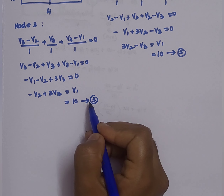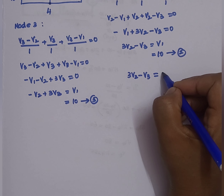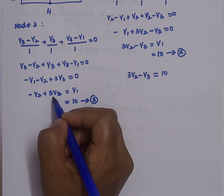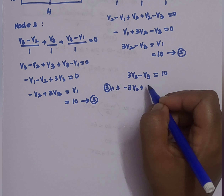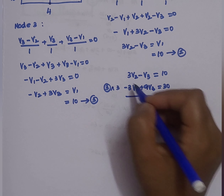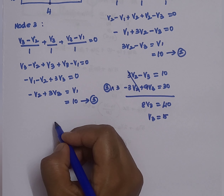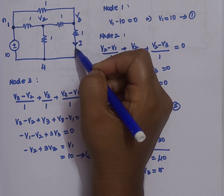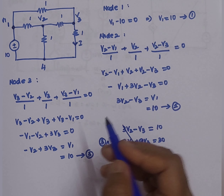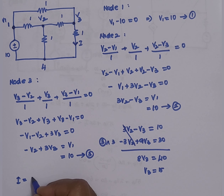Solving the second equation 3V2 − V3 = 10 and the third equation −V2 + 3V3 = 10: multiplying the third by 3 gives −3V2 + 9V3 = 30. Adding to the second equation: 8V3 = 40, so V3 = 5. The required current I = V3/1 = 5/1 = 5 amperes.